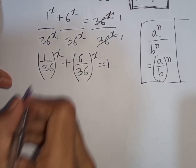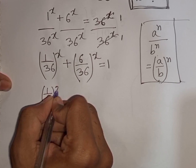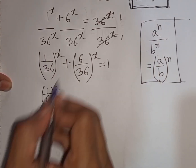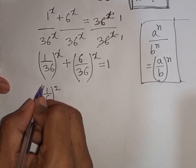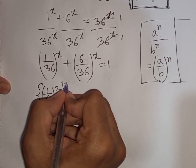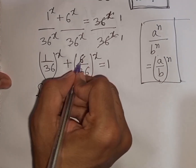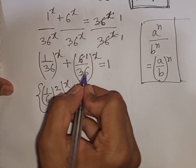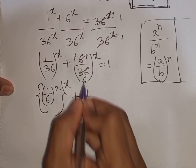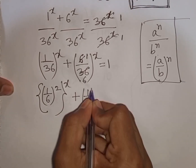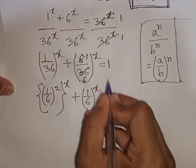Now 1/36 can be written as (1/6) bracket power 2, since 1 squared over 6 squared equals 1/36, and 6 squared equals 36. So the first bracket can be written as the second bracket. Then 6 divided by 6 means it will be 1, and 36 divided by 6 means it will be 6. So we have (1/6) power x is equal to 1.